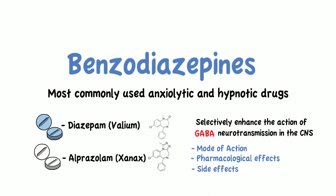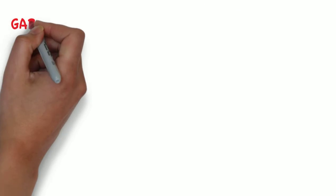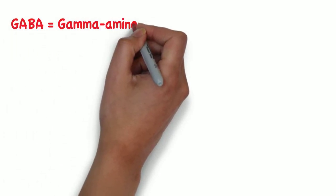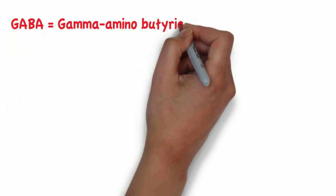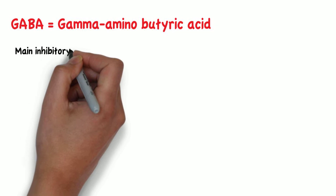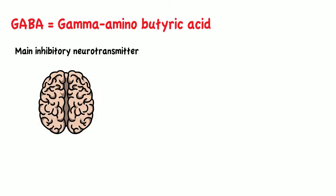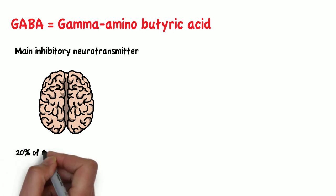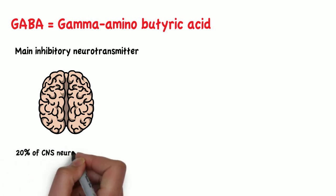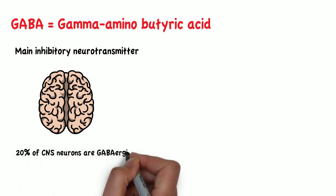To understand the action of benzodiazepines, we first need to understand what GABA is and how it acts in the body. GABA stands for gamma-aminobutyric acid and it is the main inhibitory neurotransmitter in the brain. About 20% of central nervous system neurons are GABAergic.